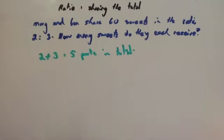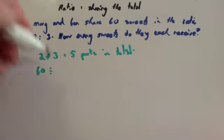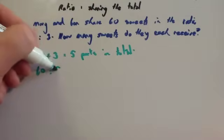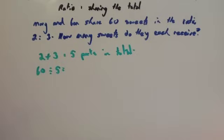Now the 60 sweets, take the 60 sweets, and you're going to divide that by how many parts there are in total. That tells you how many sweets are in each part. So 60 divided by 5.